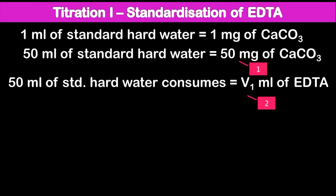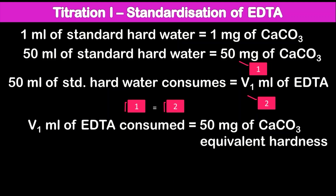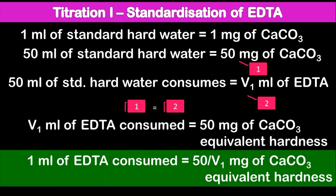Since 50 ml of standard hard water consumes V1 ml of EDTA, and 50 ml of standard hard water is equivalent to 50 mg of calcium carbonate, we equate: V1 ml of EDTA is equivalent to 50 mg of calcium carbonate equivalent hardness. Therefore, one ml of EDTA is equivalent to 50/V1 mg of calcium carbonate equivalent hardness — we simply divide both sides by V1.